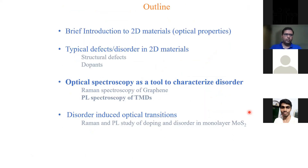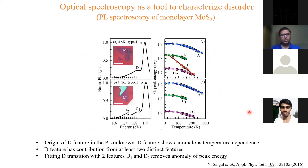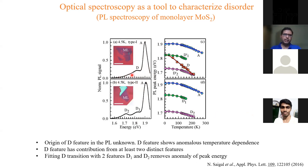Now for photoluminescence spectroscopy of semiconducting TMDs. In the typical low-temperature PL spectrum of monolayer MoS2 there is a dominant A peak due to excitons or a mixture of excitons and trions, but also a broad shoulder at lower energy labeled D. The origin of this D peak is debated in the literature. In some samples we see a single D peak, while in other samples there are two distinct peaks below the excitonic peaks.